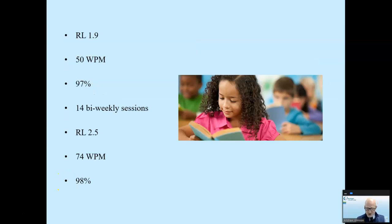Josie was a third-grade student in California with whom I worked online. I was tutoring her. Before our first session, I listened to her read passages at grade level 1.9. She read 50 words per minute with 97% accuracy. Seven weeks later, after 14 sessions, she read passages at grade level 2.5. Here she read 74 words per minute with 98% accuracy.